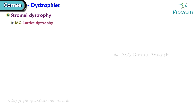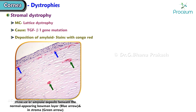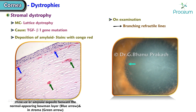The most common stromal dystrophy is lattice dystrophy. It is caused by a transforming growth factor beta-1 gene mutation, and is associated with the deposition of amyloid. It stains with Congo red, and on examination shows branching refractile lines in glass-like opacities.